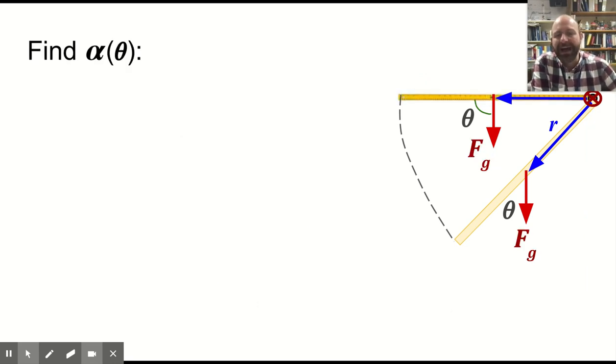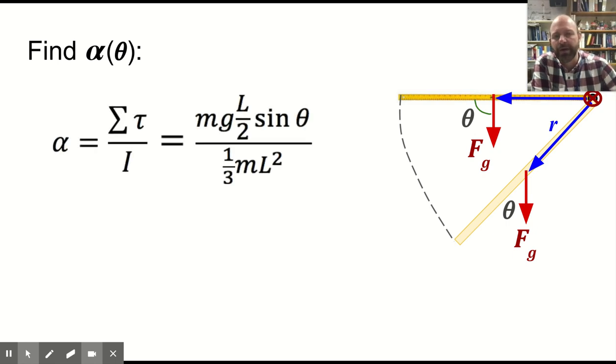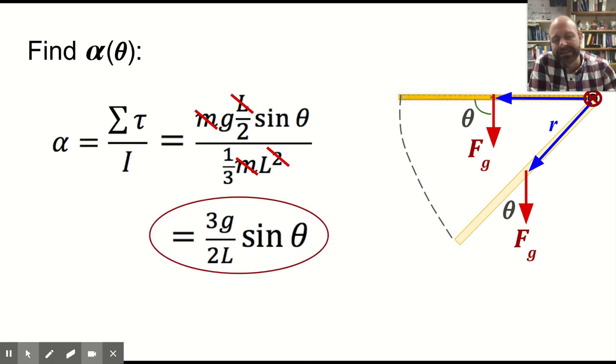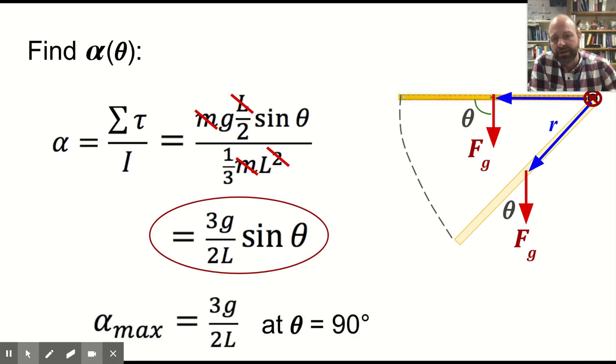So how do you find alpha as a function of theta? Well, what you can do is you can think about this basic relationship. mg times L over 2 is the torque minus the bit about the angle, and so we multiply that by sine of theta, and so we can simplify this down, divide it by the moment of inertia, and you end up with 3g over 2L times the sine of theta, which means that at any point as this swings down, we can find the angular acceleration, and the maximum will occur when sine of theta is max, and that occurs when theta is 90 degrees.